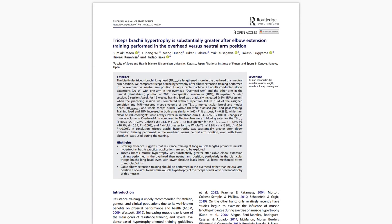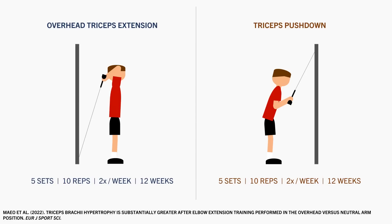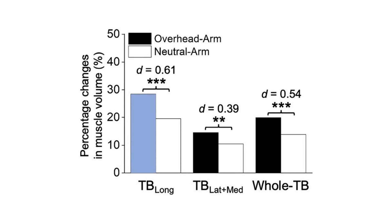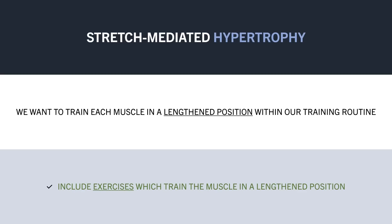Next, let's discuss stretch-mediated hypertrophy. This is the emerging concept that the portion of an exercise when the muscle is stretched seems to be the most hypertrophic, and exercises which train a muscle in a more stretched position tend to be more hypertrophic. For example, one study compared triceps growth from overhead extensions versus pushdowns. Trainees performed overhead extensions with one arm and pushdowns with the other for 5 sets of 10 reps, twice per week for 12 weeks. While both triceps saw significant growth, the long head especially saw greater hypertrophy with overhead extensions compared with pushdowns, likely because overhead extensions train the long head in a more stretched position. This suggests we probably want to hit each muscle in a fairly lengthened position at some point within our training routine.